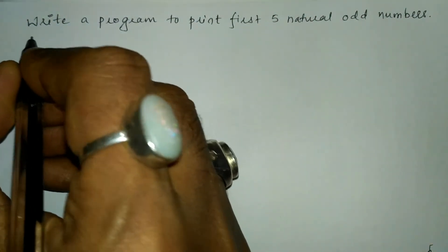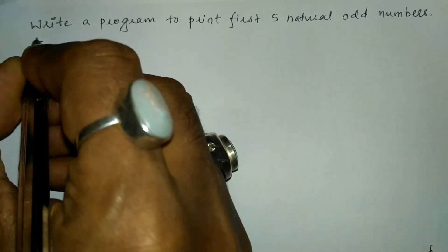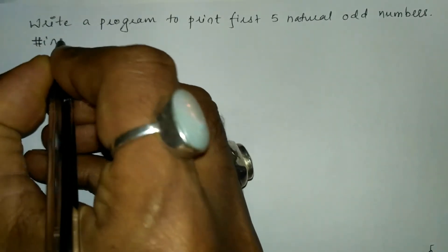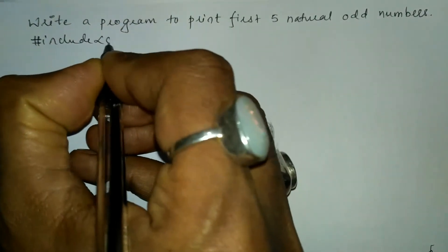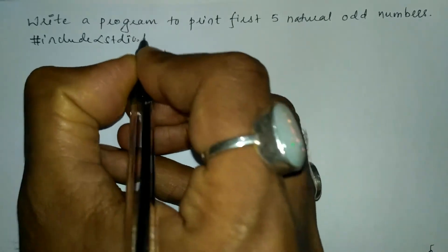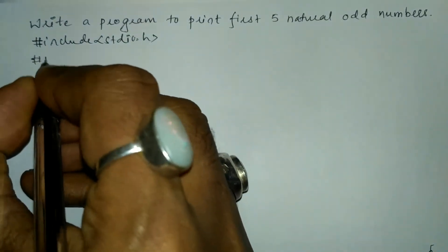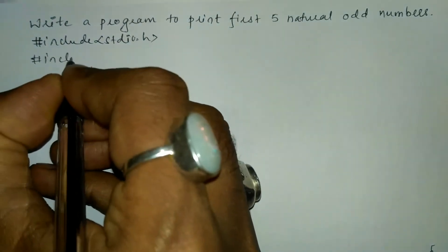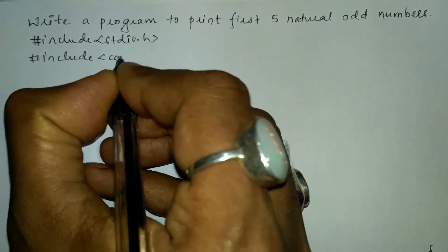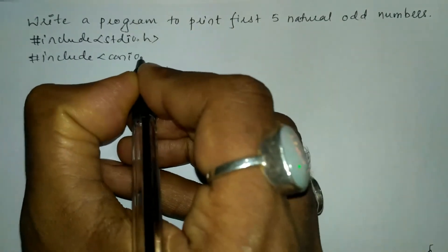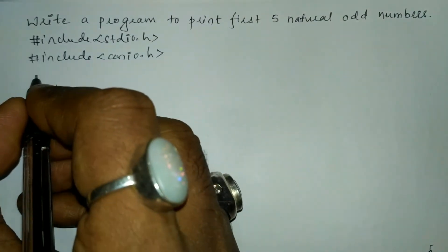Let us write the preprocessor directives. Hash include in angular brace, we'll write standard input output dot h header file. The next preprocessor directive is hash include in angular brace, we'll write console input output dot h header file.